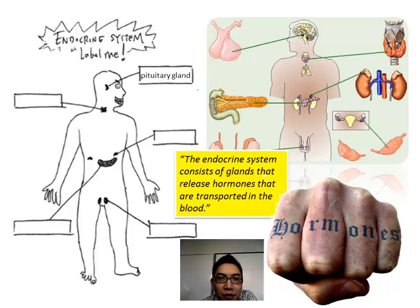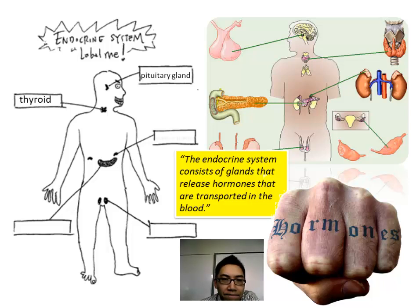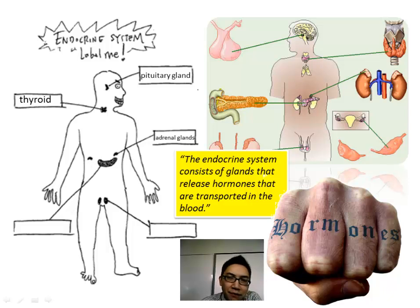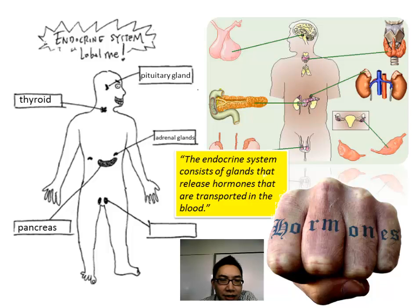The pituitary gland can also be identified up here. The thyroid. The adrenal glands are sitting on top of the kidneys — they're physically above the kidneys. And the pancreas.